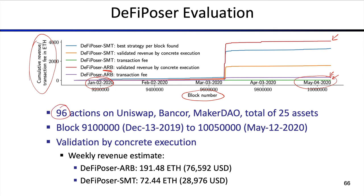As part of our evaluation, we had 96 actions on the Uniswap, Banker, and MakerDAO markets, covering a total of 25 assets. While this might sound like something, it's not really a lot in DeFi terms — there are many more markets and assets out there. From an empirical perspective, it's very intense to model all these markets in the SMT version, and it wouldn't scale easily to perform such evaluation on any kind of market.